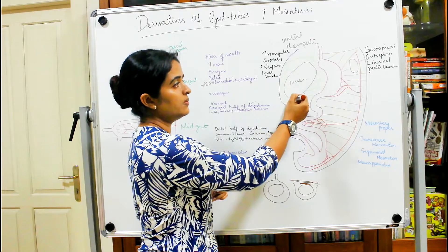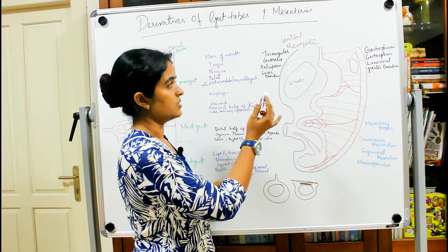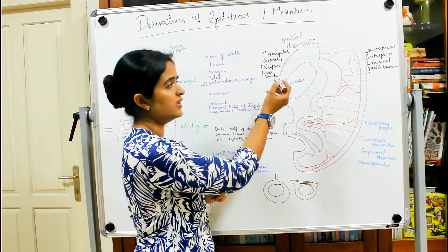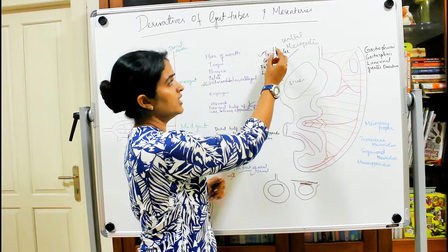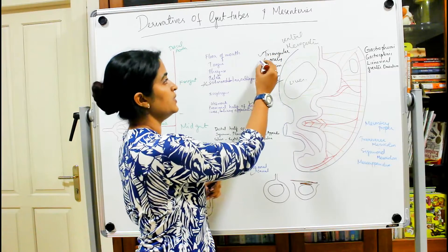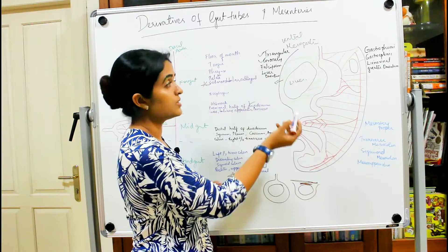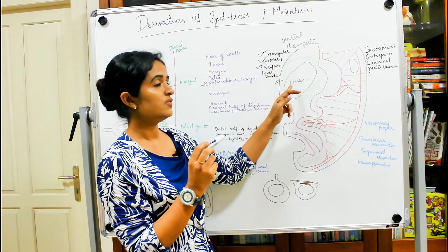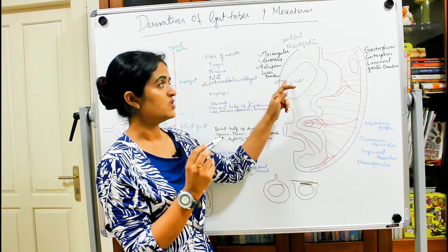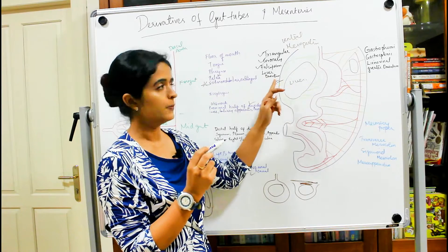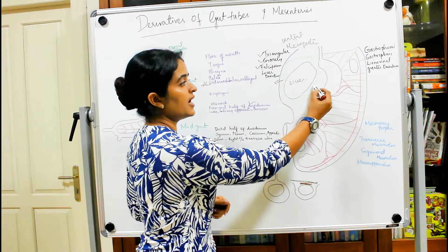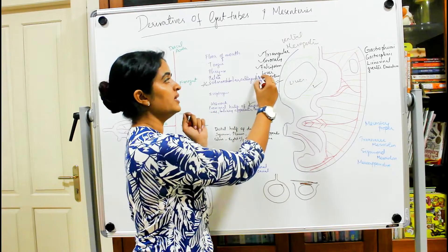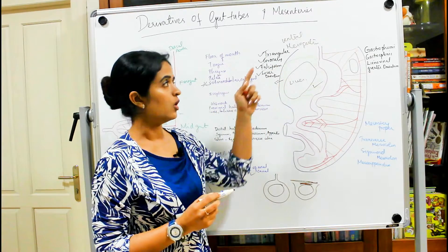With the development of the liver in the ventral mesogastrium, that structure is divided into two portions. The part lying in front of the liver forms the right and left triangular ligaments, superior and inferior coronary ligaments, and the falciform ligament. The portion lying between the liver and the stomach forms the lesser omentum. These are all derivatives of the ventral mesogastrium.